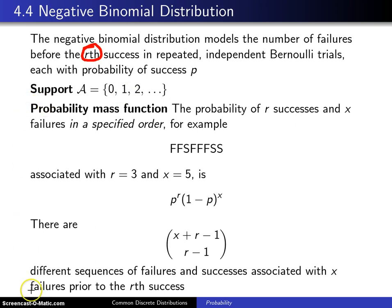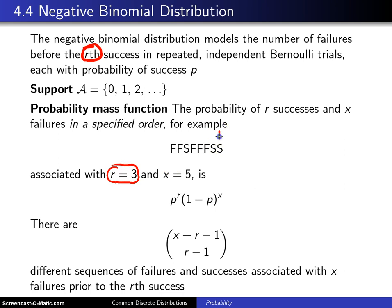Now we'll derive the probability mass function for the negative binomial distribution. The probability of r successes and x failures in a specified order — for example, failure, failure, success, failure, failure, failure, failure, failure, success, success — gives the probability of this particular string. Notice we are waiting for the third success, and in this string there are five failures before the third success. In general, that will be p to the r times one minus p to the x.